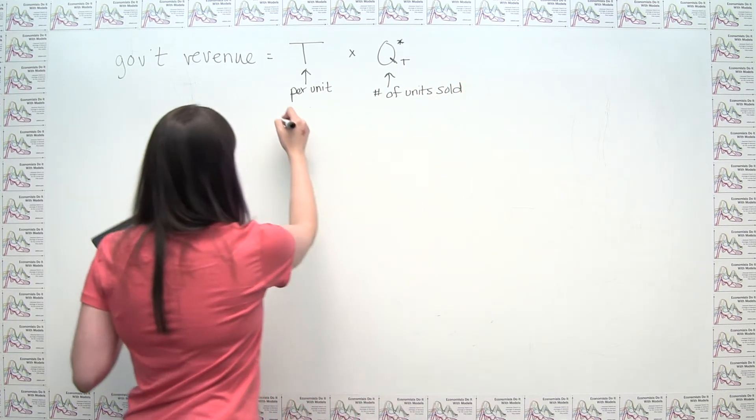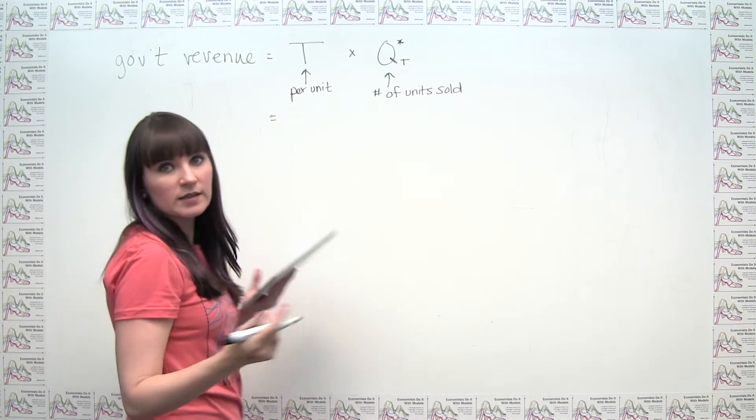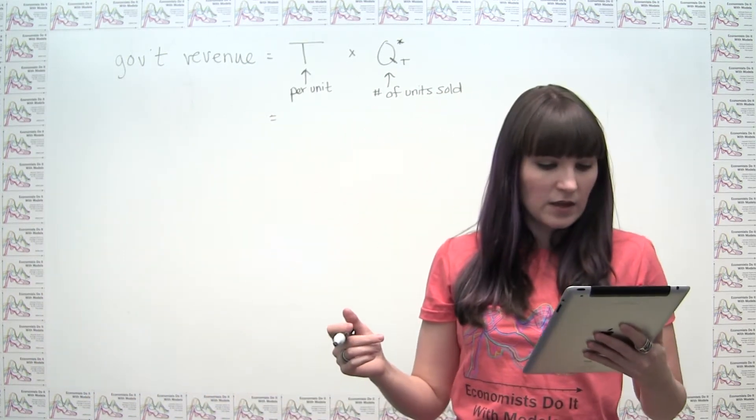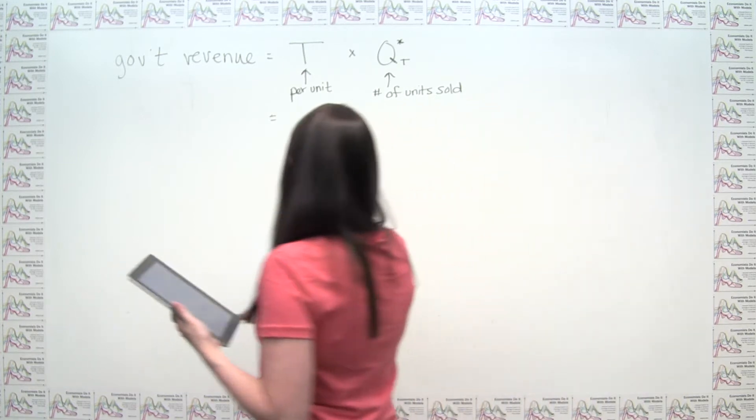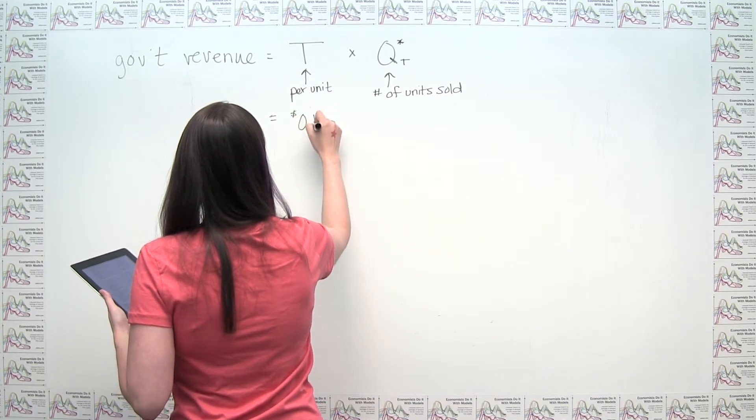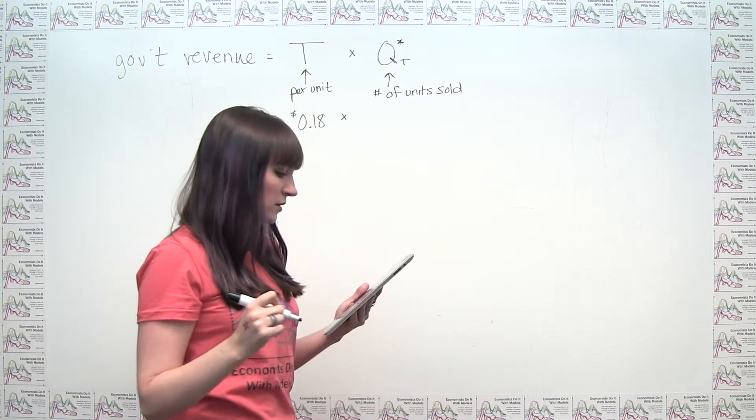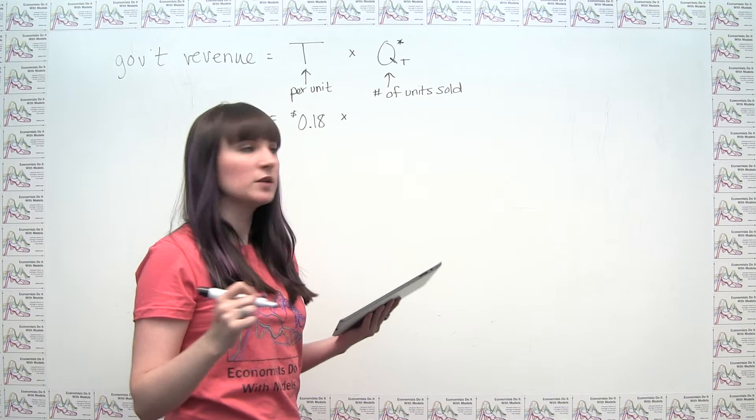So then all we have to do is plug in the data from our question. And we say, 18 cents per gallon, so that's going to be our tax per unit, times, now I have a big number, 15.6 billion gallons.